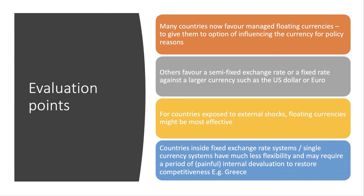Countries inside a fixed exchange rate system — particularly those inside a single currency block — have much less flexibility, as it takes away one of those policy instruments. Greece, for example, couldn't devalue or depreciate because it had the euro. Had Greece had a floating exchange rate after the crisis, the value of the drachma would undoubtedly have fallen quite substantially, causing some inflation initially, but perhaps stimulating the growth of exports and other industries going forward.